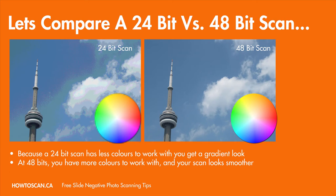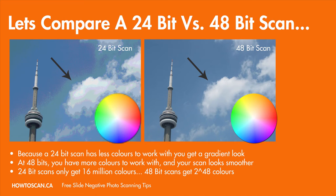Here's what I mean by smoother color gradient. Notice how when the color changes in a 24-bit scan, it looks blocky — going from one color to the other looks less smooth. But in the 48-bit image, the gradient is a lot smoother. The reason is that at 48 bits, your scanner can use 2 to the power of 48 different colors to fill that one pixel. The more colors it can pick from, the smoother the image. This is one big advantage of 48 versus 24 bits.